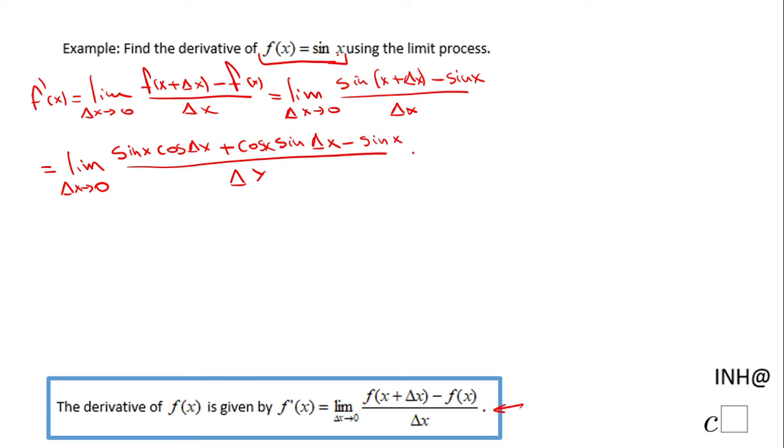And my next thing will be to arrange this expression. First thing I'm going to do is factor a sine of x here and here, and that will give me sine of x times cosine of delta x minus one, plus the last part cosine of x sine of delta x over delta x.